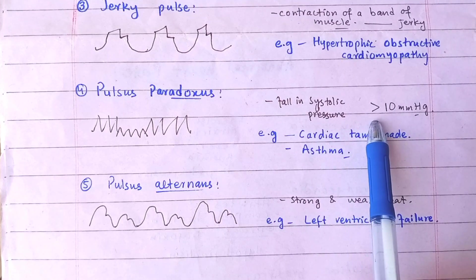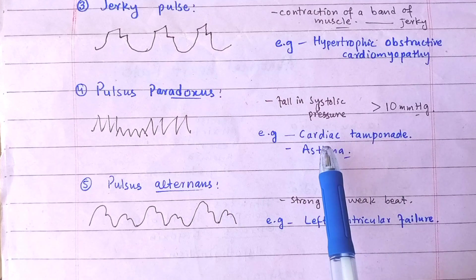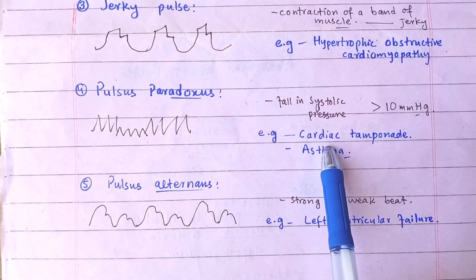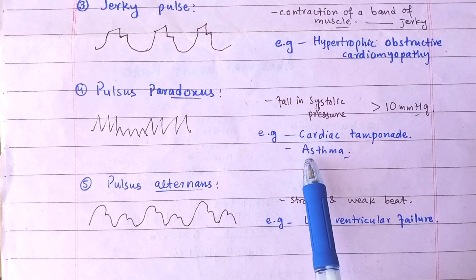But in cases of pulsus paradoxus, this fall is more than 10 mm of mercury. It occurs in massive pericarditis, for example cardiac tamponade, constrictive pericarditis, and acute severe bronchial asthma.